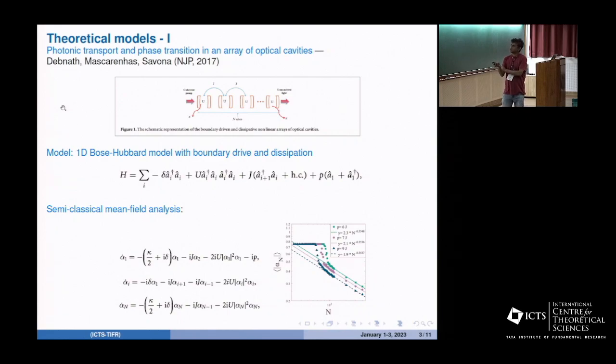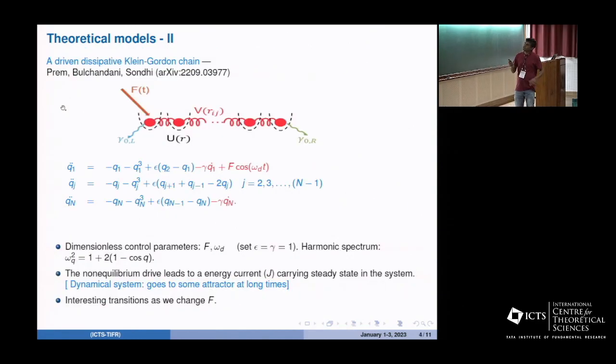What you find is that as you increase your system size for various values of the driving force P, you get a sharp transition. There's a regime where the current stays completely flat and then a regime where the current decays not as one over n like a diffusive system but in some anomalous way.